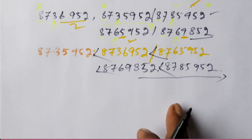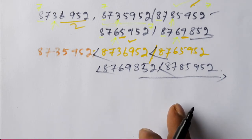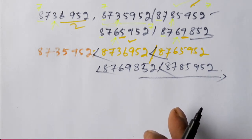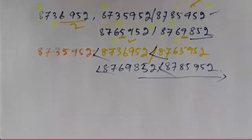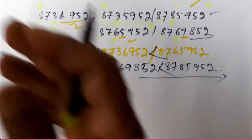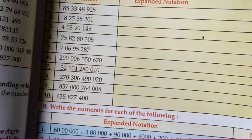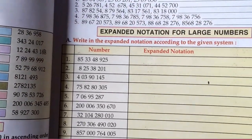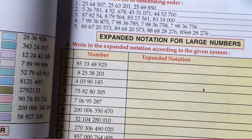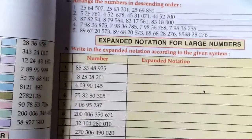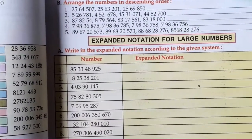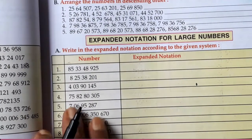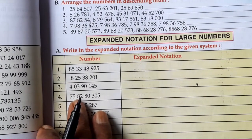The next four problems you will write as homework. Next, we will do the descending order. Descending order means arranging from the largest number to the smallest number.